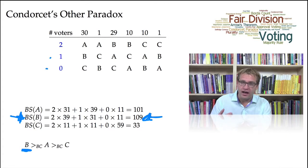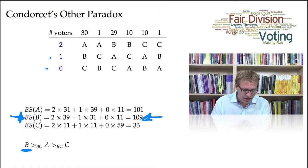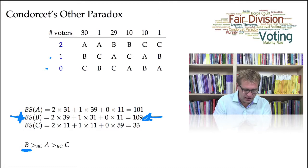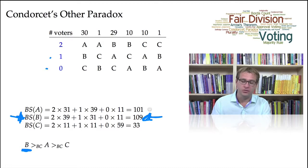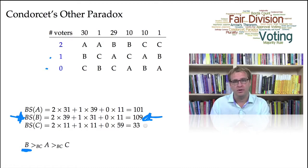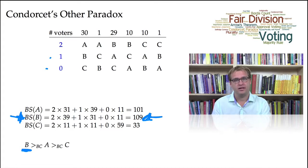If you calculate the total score for each of the candidates, candidate B is declared the winner, candidate A comes in second with 101 points, and candidate C gets only 33 points. You may want to pause the video just to double-check that my calculations are correct.